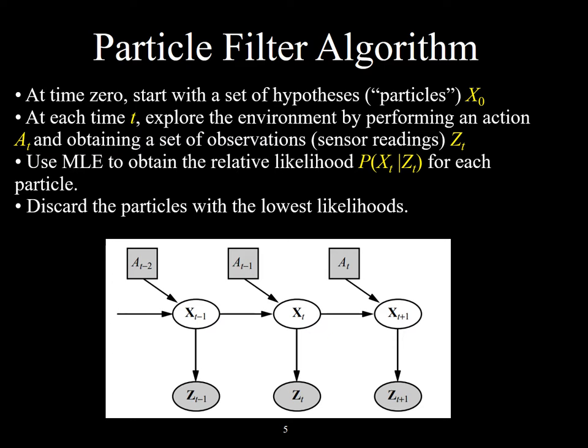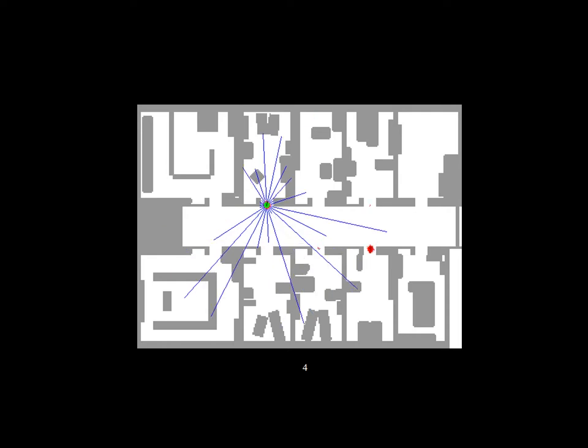We can discard particles or hypotheses that are below some probability threshold — highly improbable ones — and keep, say, the 100 most likely hypotheses. Here's a neat animation showing a lot of initial hypotheses. All those little red dots represent the set of hypotheses, and as the robot moves around the environment collecting more sensor readings, the number of possible hypotheses is drastically reduced. Eventually, looking at the upper left and lower right, the robot could be in maybe one of two places, and then by encountering more obstacles and comparing them to its stored map, it knows pretty much exactly where it is.